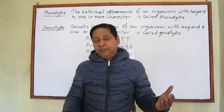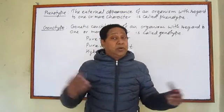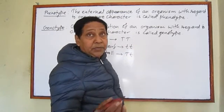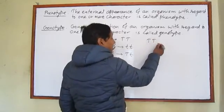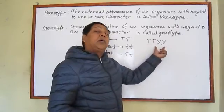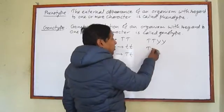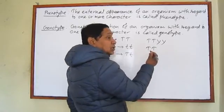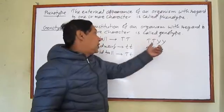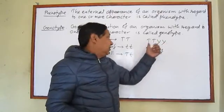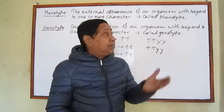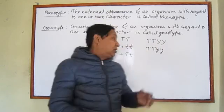We can also consider two characters together. If a pea plant has pure yellow seed, we can write the genotype as capital T capital T capital Y capital Y — meaning pure tall and pure yellow seeded. Similarly, if it is pure tall but with pure green seed, the genotype reflects both characters. The external appearance of an organism with regard to one or more characters is phenotype, and the genetic constitution with regard to one or more characters is called genotype.